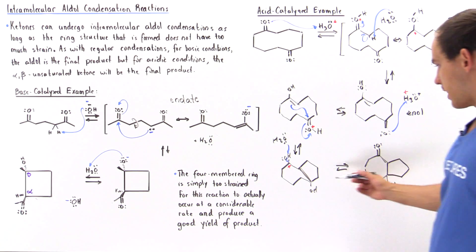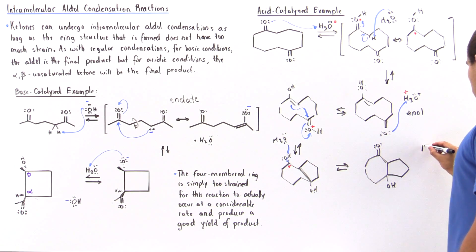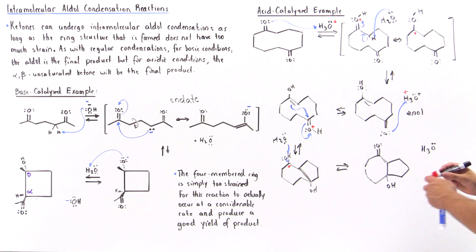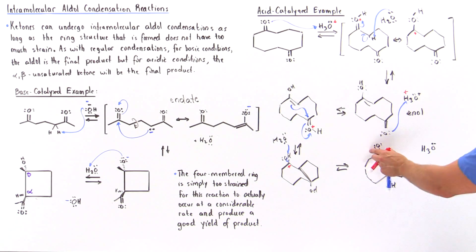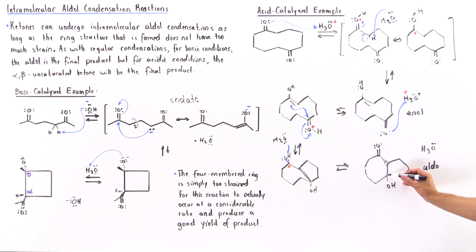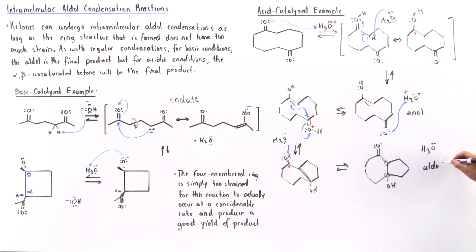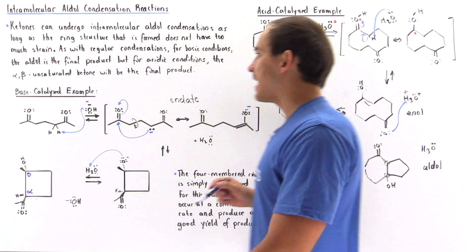So this is our aldol — our beta-hydroxy ketone. We have a five-membered ring. This is the alpha carbon, this is the beta carbon, and to the beta carbon we have the hydroxy group. Now this is not the final product formed. Remember, in the acid-catalyzed version, the aldol is just an intermediate. The final product is the alpha-beta unsaturated ketone.